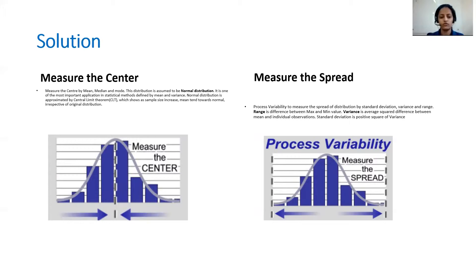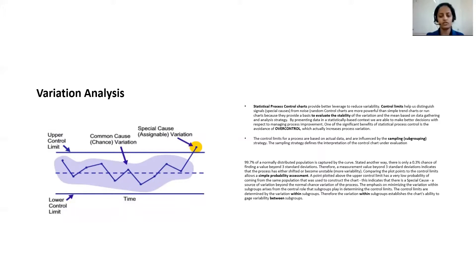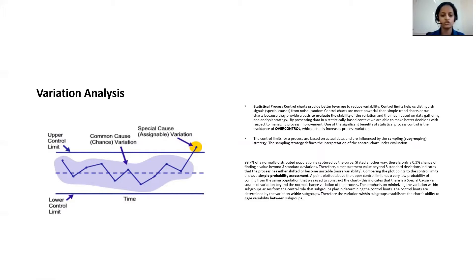Through these values, we can actually measure the center and the spread of the distribution. Coming to the variation analysis, this is done through statistical process control charts. The statistical process control charts provide better leverage to reduce variability. Control limits help us distinguish between signals — as you can see in the graph, there are certain signals which have crossed the control limits. Control limits help us distinguish between the special cause variation, which is the signal, from the noise. Statistical process control charts are the most recommended charts compared to trend charts or any other run charts, because they evaluate the stability of the variation and the mean based on data gathering and analysis strategy.